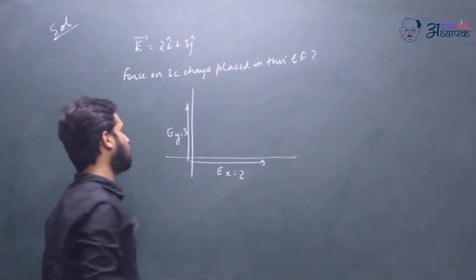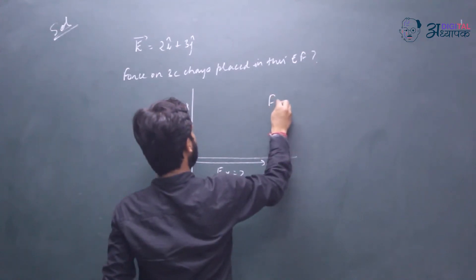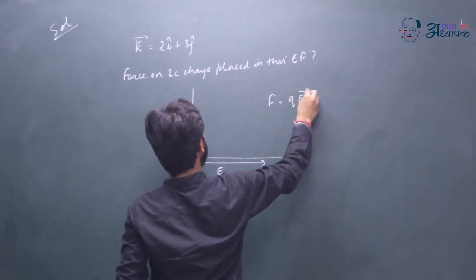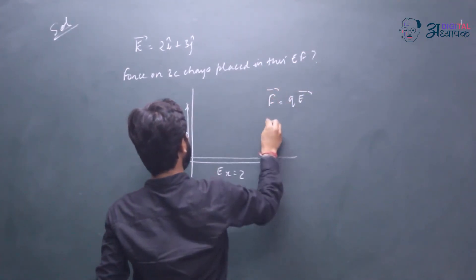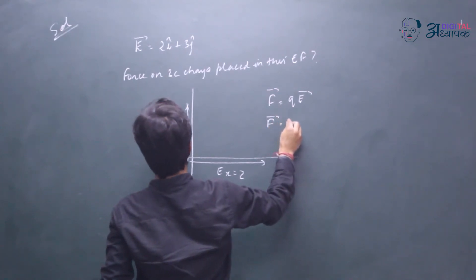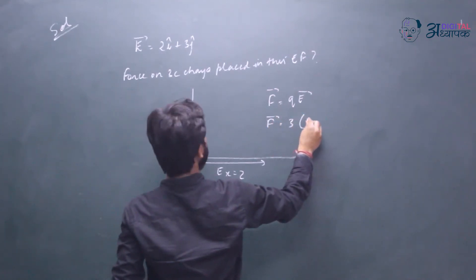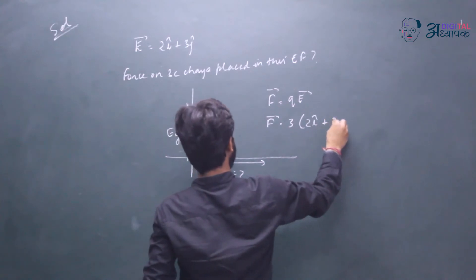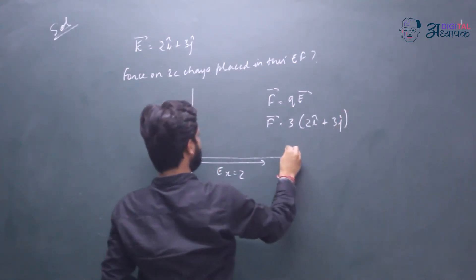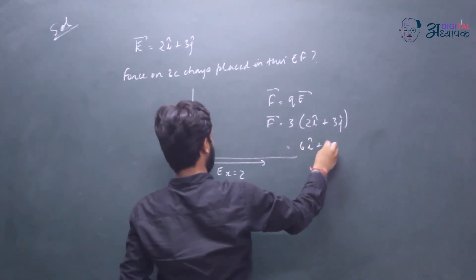We will simply solve this problem using the formula: F vector is equal to Q times E vector. F is equal to Q times E, which is 3 into the electric field value 2i cap plus 3j cap. Multiplying this gives us 6i cap plus 9j cap Newton.